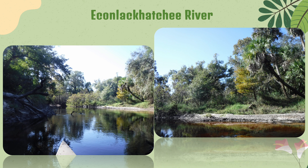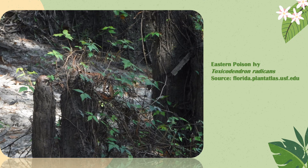First, we're going to be looking at the Ekon Lakachi River — this was our example of a black water river system. The first plant we're starting with is Eastern poison ivy, Toxicodendron radicans. You could tell this was poison ivy right away because of the three leaves. This plant contains urushiol, which is what causes the inflammation and usually the severe contact dermatitis that causes irritation when people come in contact with it.